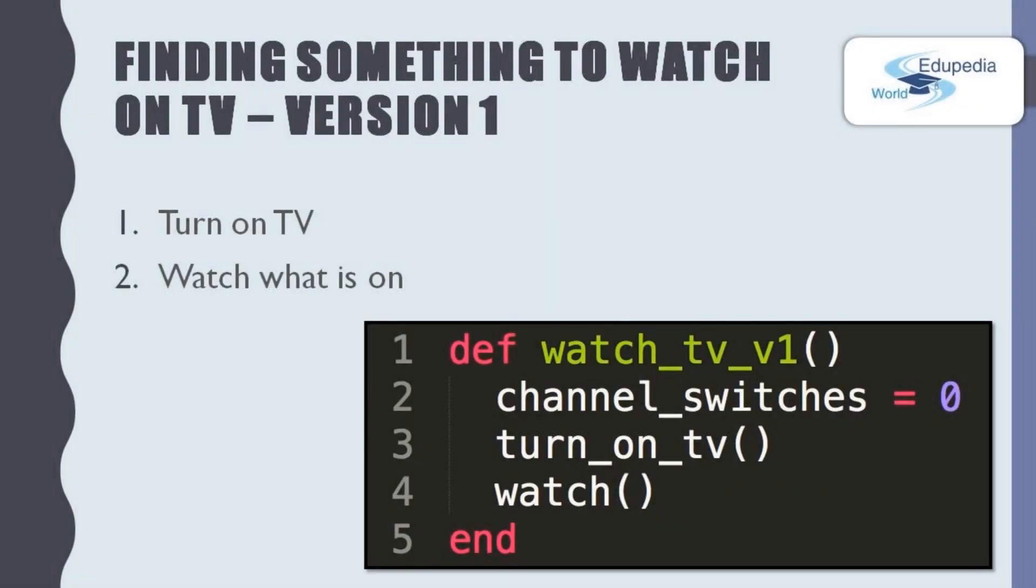Here is one solution. Turn on the TV and watch whatever that appears in the TV channel. We can write it down like this in a procedure. Def, that means define the name of the procedure. Watch TV version 1. And inside this procedure, channel switches is 0. Because we are not going to switch the channels. We are watching whatever in the TV channel that appears. The first step, turn on the TV.